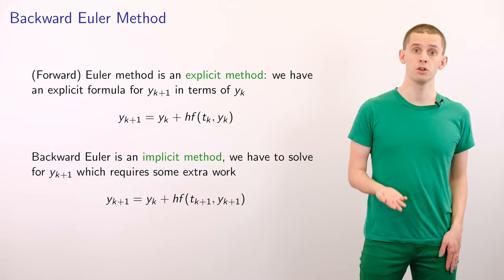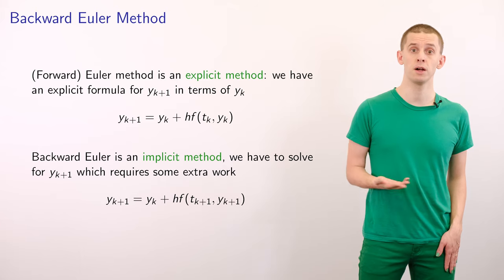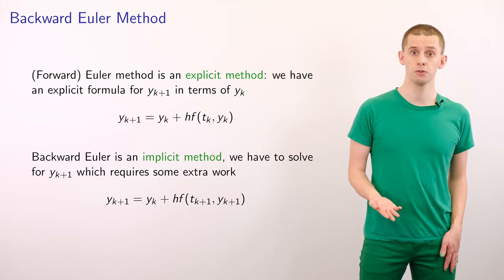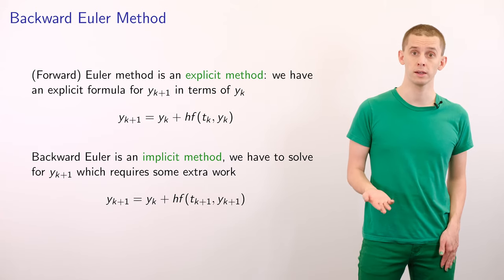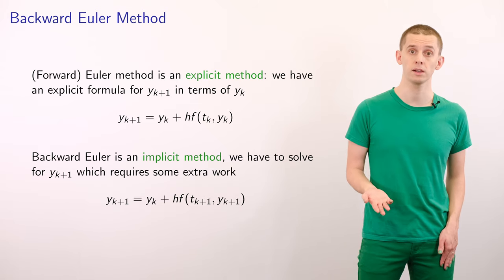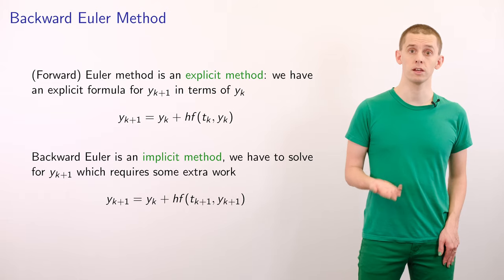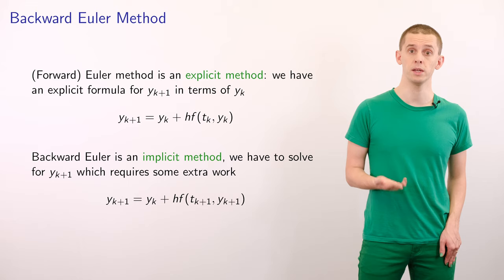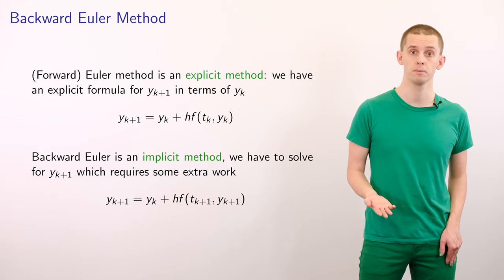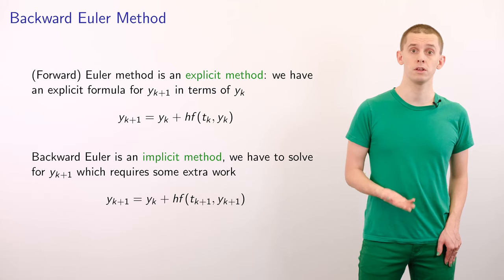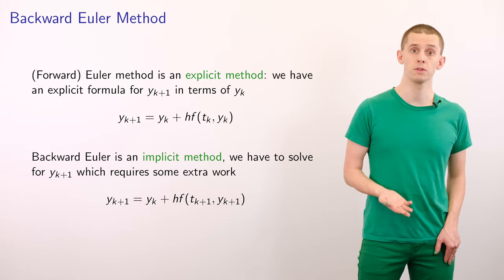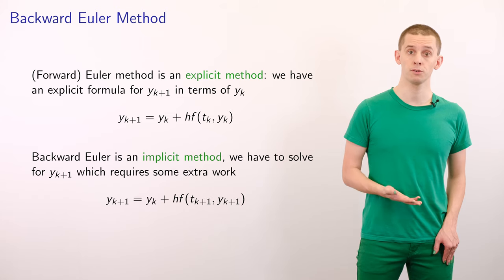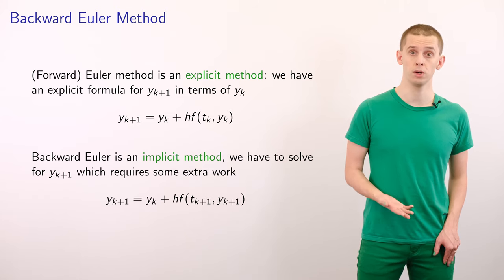Now it's worth noting that the two integration formulae that we've derived so far are actually rather different in character. If we look at the first formula that's often referred to as the forward Euler method, then this is an example of an explicit method. When we look at the equation yk plus 1 is equal to yk plus h times f of tk and yk, this gives us an explicit expression for yk plus 1 in terms of yk. If we look at the backward Euler method, this is an example of an implicit method. The formula that we have here involves yk plus 1 on both the left-hand side and the right-hand side. We therefore have to solve this equation to find yk plus 1 in terms of yk.